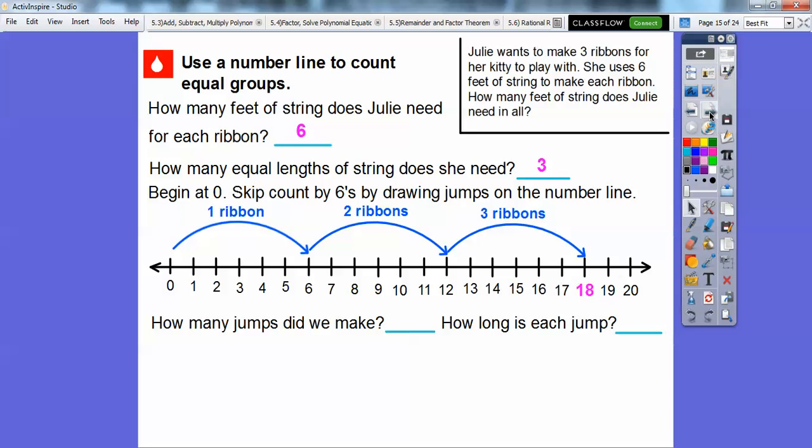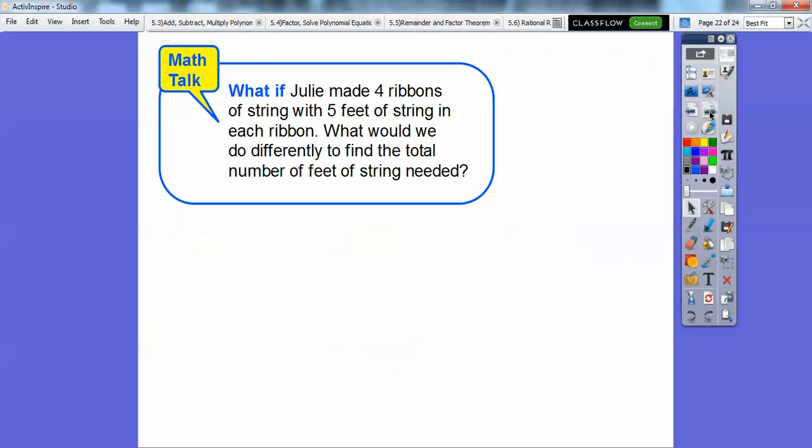So how many jumps did we make? We made three jumps. And how long was each jump? It was six feet right there. So we're going to multiply three times six because we did three jumps of six or three groups of six. So three times six. Here it is right here. It equals 18 right there. So Julie needs 18 feet of string in all to make all three ribbons.